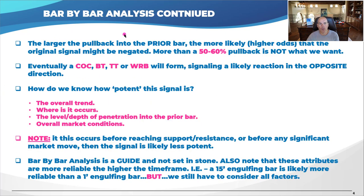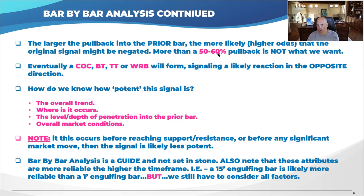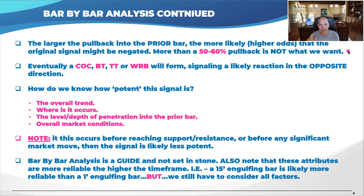The larger the pullback into the prior bar, the higher the odds that the original signal might be negated. It's one thing to have a green bar followed by a small red bar. But if you have a green bar followed by a 50% or 60% red bar back into that green bar, that contradicts your expectation. You have to change your opinion or bias based on this new information.